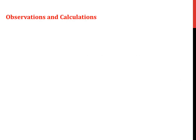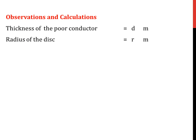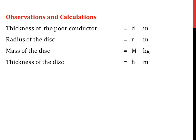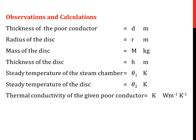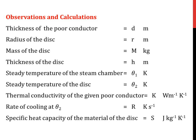The various observations and terms needed to proceed with calculations for this experiment are: the thickness of the poor conductor denoted by small d; the radius of the disc denoted by small r; mass of the disc represented by capital M; thickness of the metal disc denoted by h; steady state temperature of the steam chamber which is θ1; steady state temperature of the metal disc represented by θ2; thermal conductivity of the given poor conductor K; rate of cooling at θ2 given by capital R; and specific heat capacity of the material of the metal disc denoted by S.